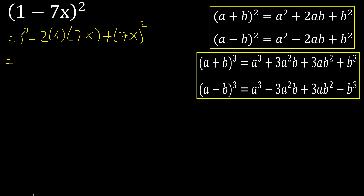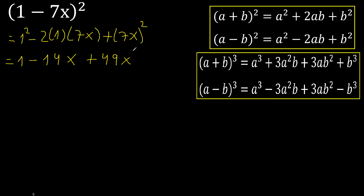Exponent: 1 multiplied 2 times. 1 multiplied by 1 is 1. Minus 2 multiplied by 1 is 2, multiplied by 7 is 14x. Plus 7 multiplied 2 times: 7 multiplied by 7 is 49x exponent.